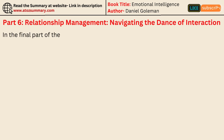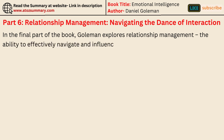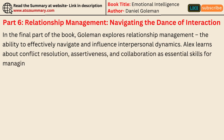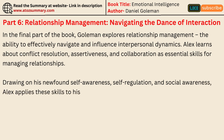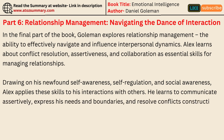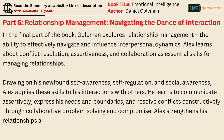In the final part of the book, Goleman explores relationship management — the ability to effectively navigate and influence interpersonal dynamics. Alex learns about conflict resolution, assertiveness, and collaboration as essential skills for managing relationships. Drawing on his newfound self-awareness, self-regulation, and social awareness, Alex applies these skills to his interactions with others. He learns to communicate assertively, express his needs and boundaries, and resolve conflicts constructively. Through collaborative problem-solving and compromise, Alex strengthens his relationships and fosters mutual understanding and respect.